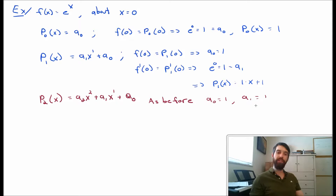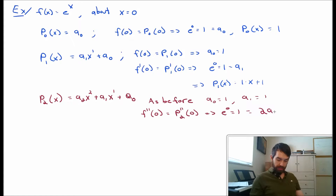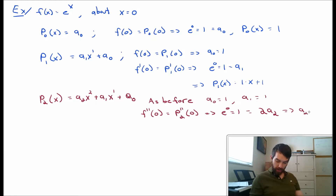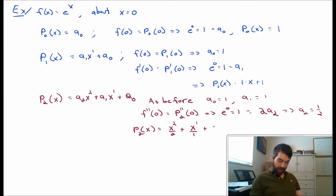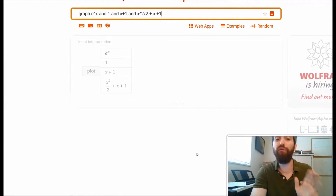For a2, I take the second derivative of the function evaluated at 0 and set it equal to the second derivative of my polynomial at 0. Two derivatives of e to the x is still e to the x, giving e to the 0 equal to 1. Two derivatives of the polynomial give 2 times a2, because the 2 from x squared comes down. So a2 equals 1/2, and my polynomial p2 of x equals x squared over 2 plus x plus 1. Back to Wolfram Alpha, I graph this new degree-2 polynomial.